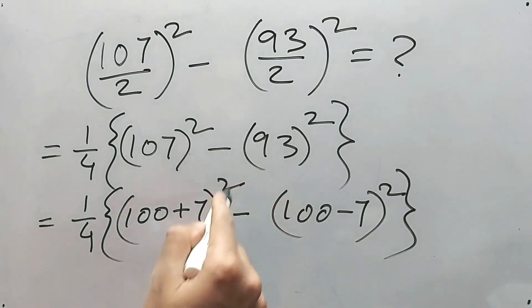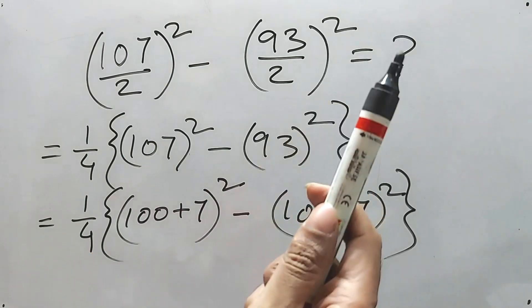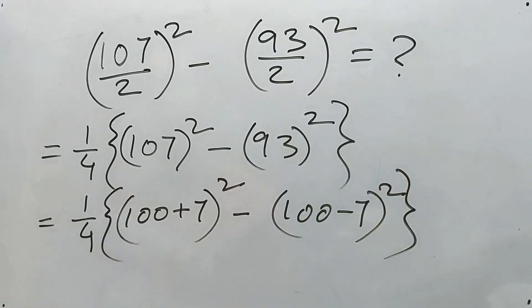Now what is this? Basically (a + b)² minus (a - b)², we know the formula, right? And that is 4ab. We have solved it. If you haven't seen it, please check it in the i button. It will help you a lot.